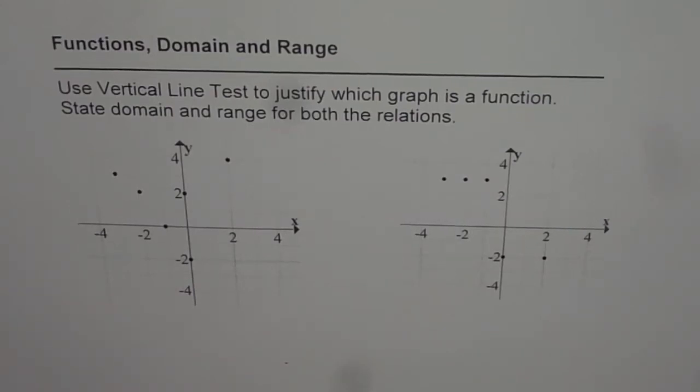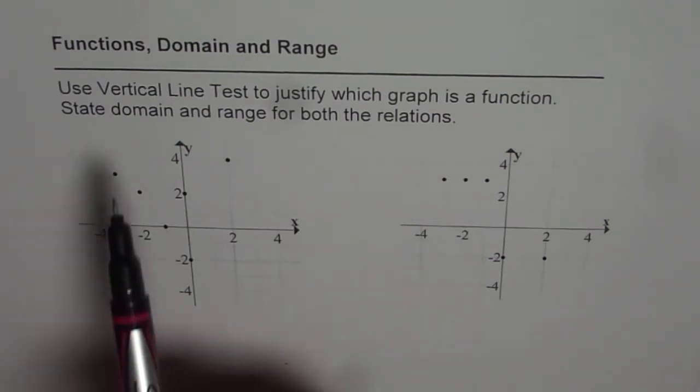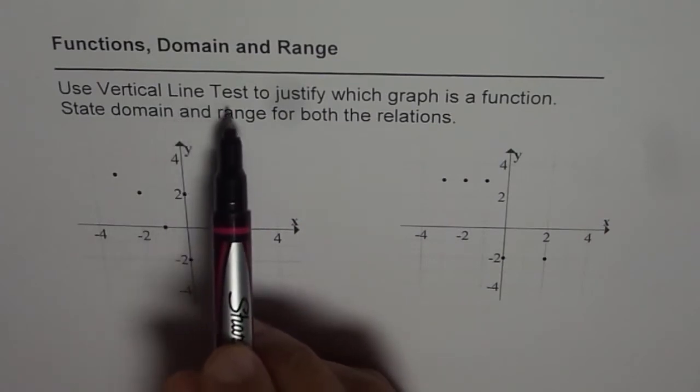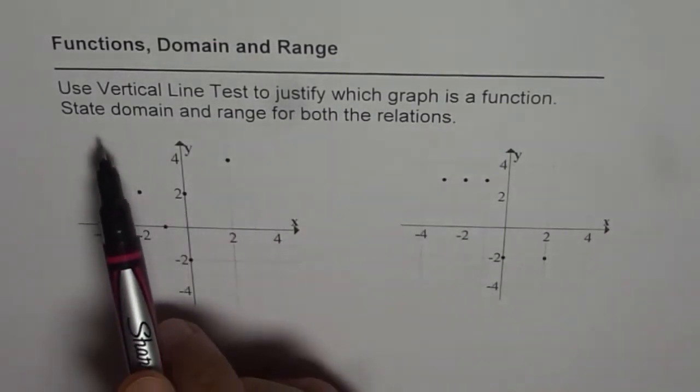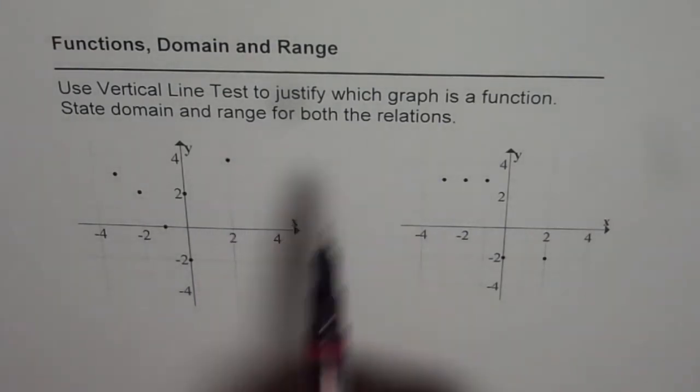Let us try to understand how to analyze a scatter plot for functions and how to write down domain and range for such a relation. The question here is: use vertical line test to justify which graph is a function. State domain and range for both the relations.